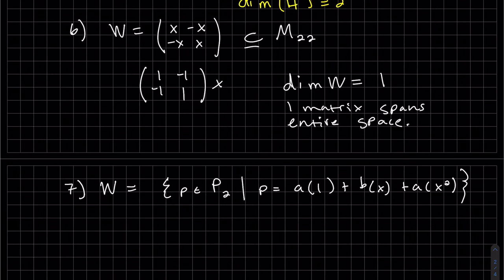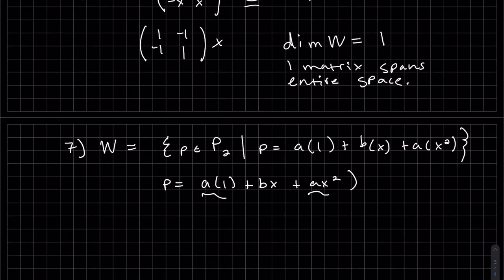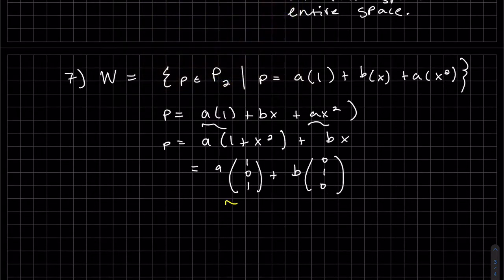Here's our polynomial subset of p2. And it's got to fit this form. So p, we can combine these two. So we have two vectors. So the dim of this w is 2.